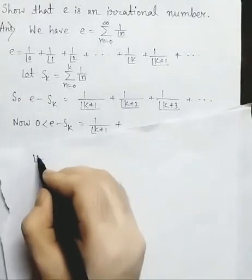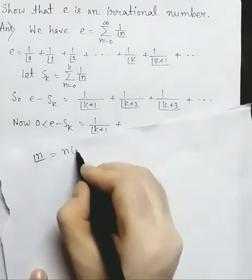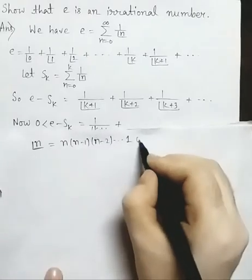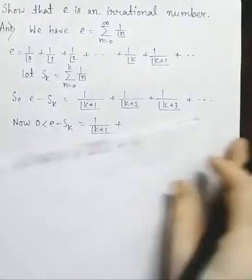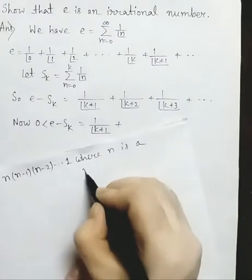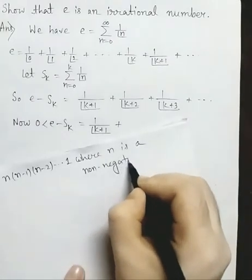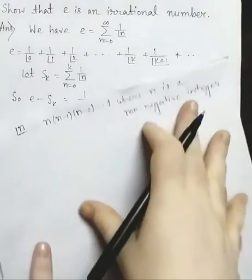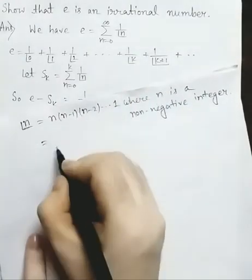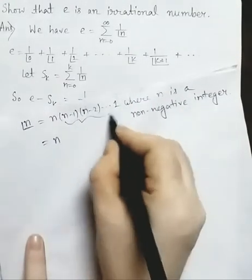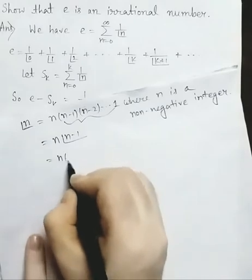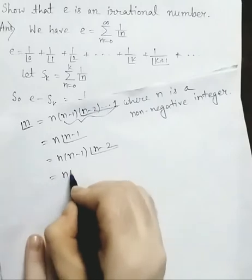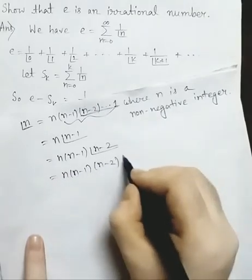We know factorial of n equals n into n minus 1 into n minus 2 into dot dot into 1, where n is a non-negative integer; otherwise factorial of n is not defined. Now we can write this as n into factorial of n minus 1, or as n into n minus 1 into factorial of n minus 2, or as n into n minus 1 into n minus 2 into factorial of n minus 3, and so on.